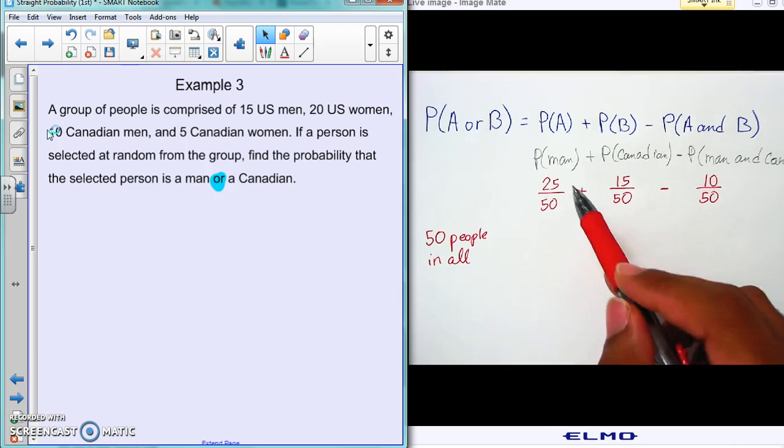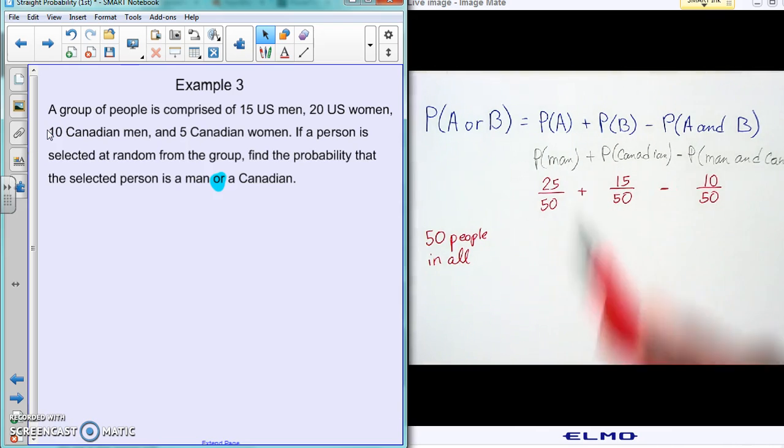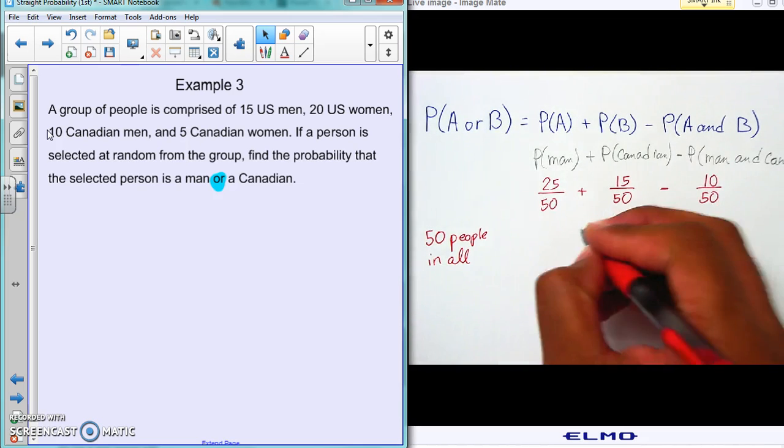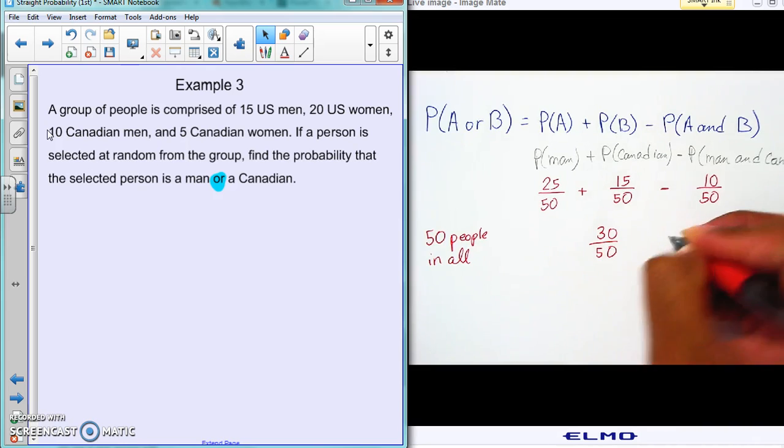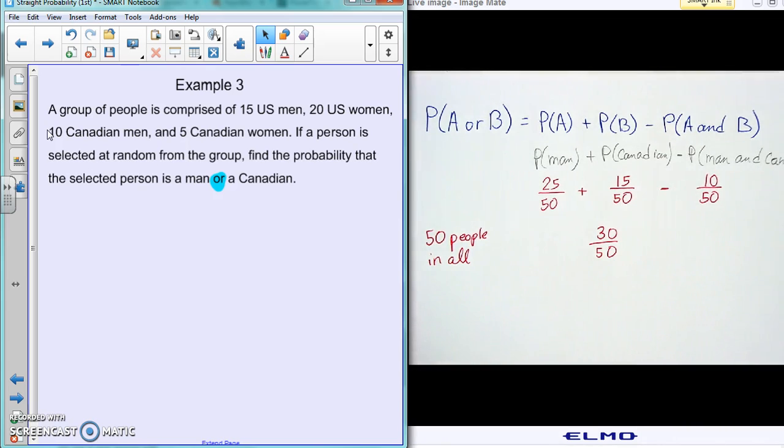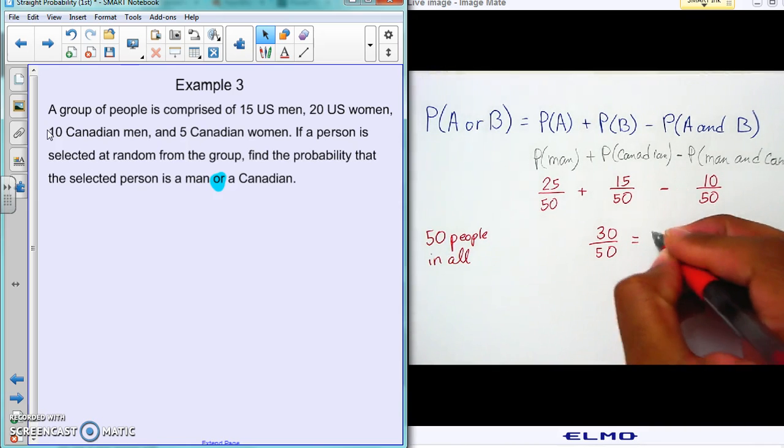So if we were to work this out, this would give us 30 over 50. And if you change it to a decimal and move the decimal over two places to the right, you'll see that that's about 60 percent.